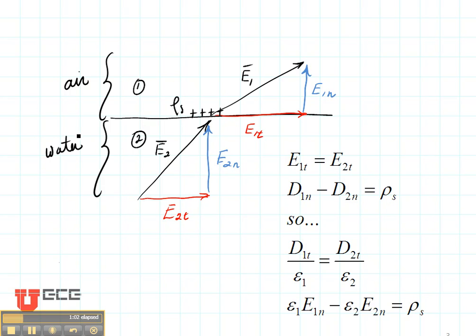There are two electric field boundary conditions, one for the tangential electric field and one for the normal electric field. The tangential electric field equation boundary condition says that the two electric field, the tangential components of the electric field are equal in region number one and region number two.